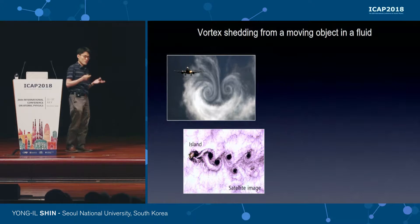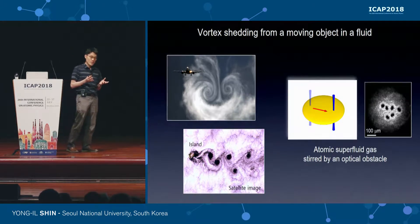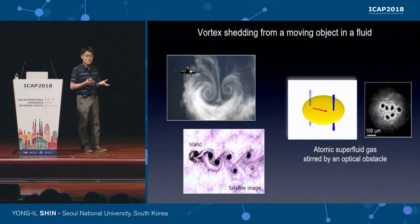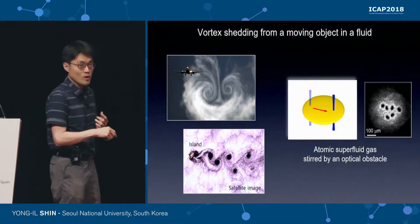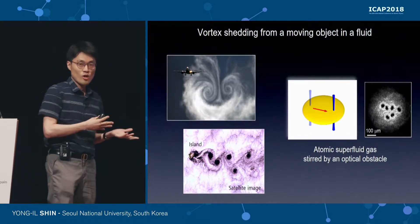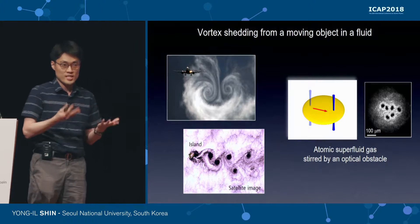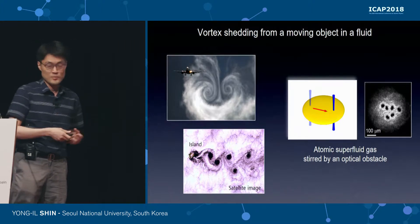With those motivations, we studied vortex shedding experiments with atomic superfluid gases. Here is a schematic for our experiment, and in this talk I want to present what we have observed.